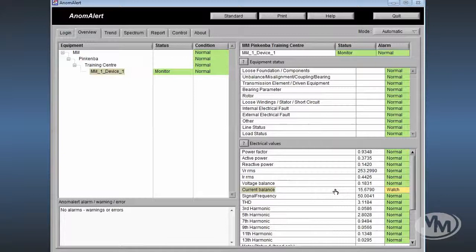Every 90 seconds, Anomalert calculates the parameters of the connected motor or generator and compares these values to its learnt model values. After some time, when statistical persistence criteria have been met, this watch warning will be elevated to an equipment status alarm and be flagged in the upper window.